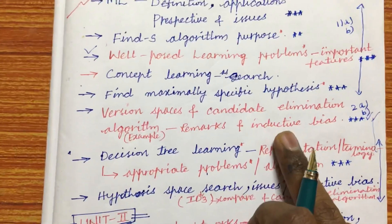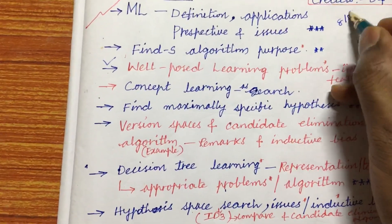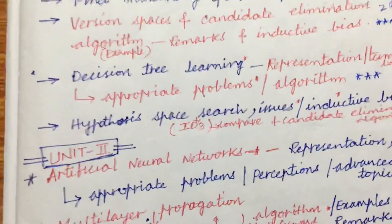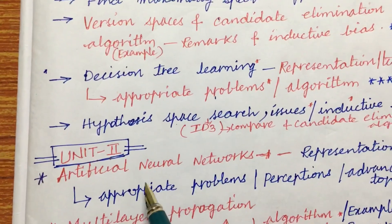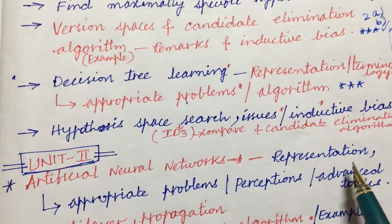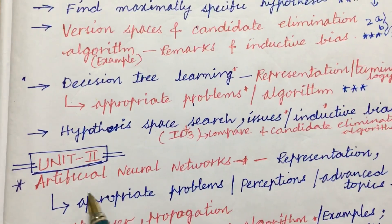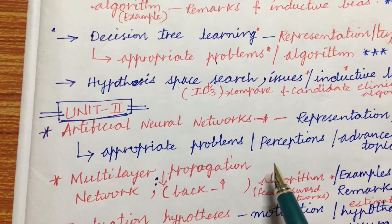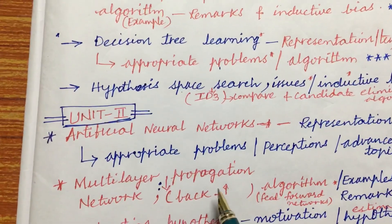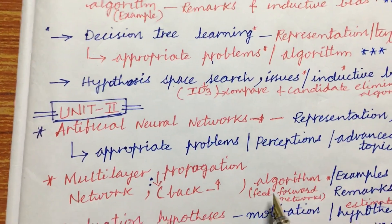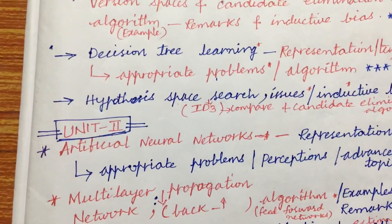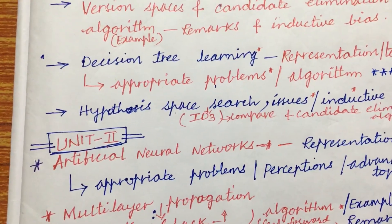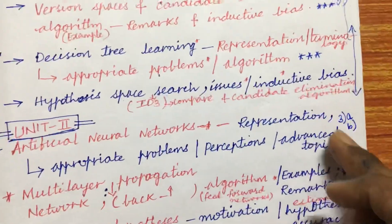As per the COVID exam pattern, out of 8 questions you are supposed to answer any 5. Unit 2 is all about artificial neural networks — its representation, appropriate problems related to ANNs, and perceptrons. The multi-layer network and back propagation algorithm, feed-forward networks, examples, and remarks are a very important gunshot question from Unit 2, which may be the third question, either 3a or 3b.